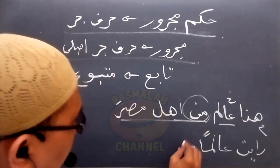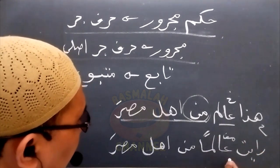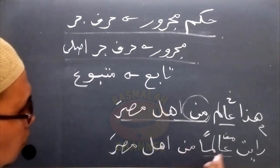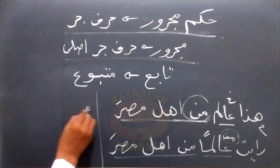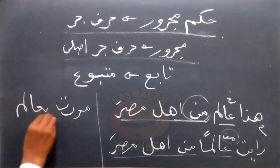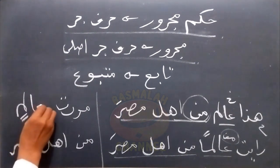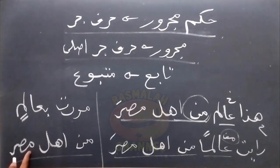Demikian pula manakala dibaca 'ra'a aliman min ahli misra' — saya melihat kepada seorang alim dari penduduk Mesir. Dimana lafad 'aliman' di sini mansub sebagai Maf'ul Bih, maka 'min ahli misra' yang berposisi sebagai tabi' daripada 'alim' ini juga dalam mahal nasab. Demikian pula manakala dibaca 'marartu bi alimin min ahli misra' — saya lewat bertemu dengan seorang yang alim yang merupakan penduduk Mesir, maka 'min ahli misra' ini juga dalam mahal jer karena mengikuti matbu' yang dalam mahal jer juga.